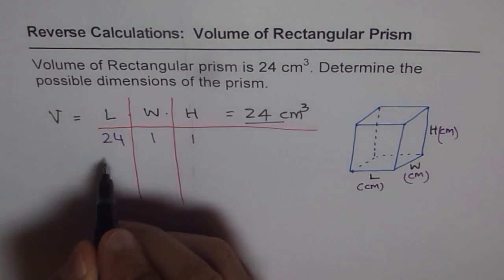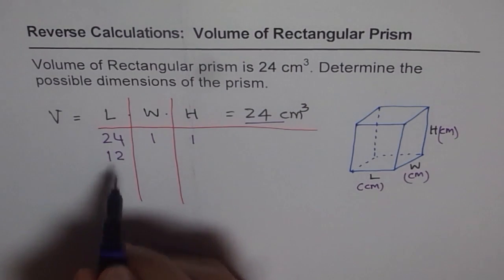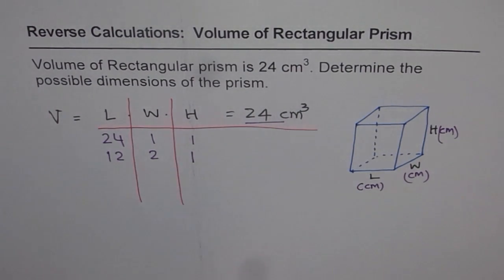So let's try with half of 24. For example, we say 12. And 12 times 2, let's give 2 to width, becomes 24. And let's keep 1 for the height. That's great. That's another combination.